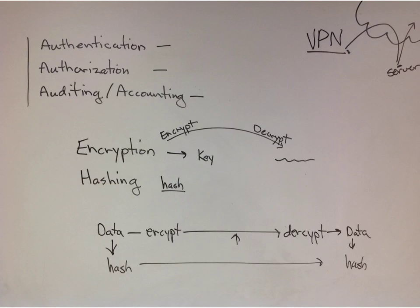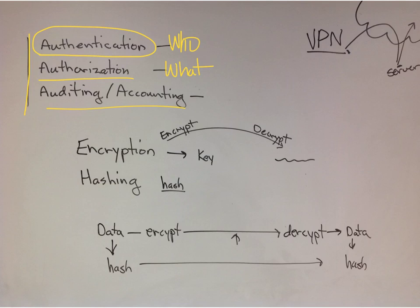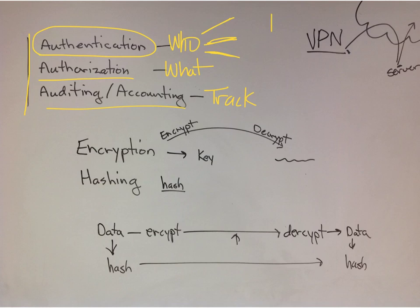How do we manage people's access to data? We authenticate them — who you are. Authorization — what you can do. And accounting and auditing — track what you did. The 'who' can be something you have, like your debit card, an access card to a building, or a fob to your car. Something you know — a password, pin number, and so forth. And something you are — like your thumbprint, or Apple reading your face. So we have this whole process of authenticating, authorizing, and accounting, done on computer systems everywhere.